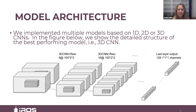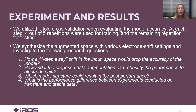We implemented models based on 1D, 2D, or 3D CNNs. The figure below shows the 3D CNN, which was our best-performing model. The structure consists of four CNN layers with 100x2x2 sized kernels, each with 8, 16, 32, and 64 filters. This is followed by one layer with a 4x2x2 sized kernel and 128 filters. The output was then flattened and fed into three fully connected layers for classification. In order to avoid bias, we use k-fold cross-validation.